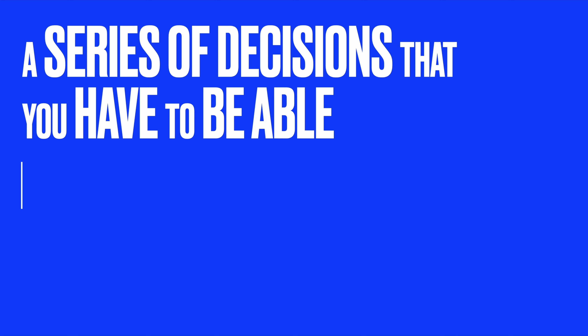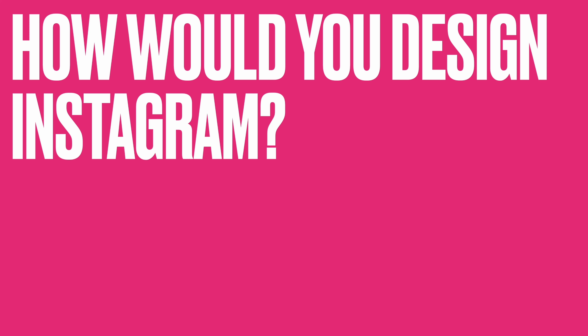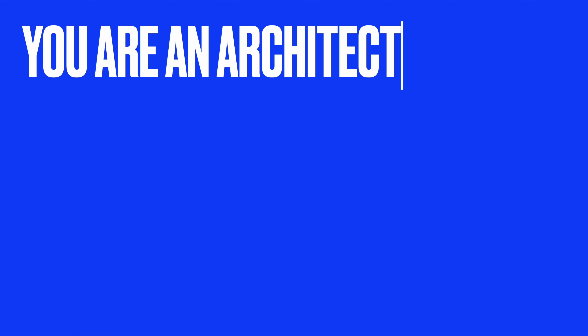Just like with real software systems, the system design interview question will not have a single correct answer. That makes it extremely different from the coding interview. There is no one optimal solution that you need to come up with, but rather a series of decisions that you have to be able to rationalize. These interviews are designed to assess your ability to gather requirements and make decisions under conditions of uncertainty. You will not be given all the information up front. Your interviewer will ask a deliberately vague question like, how would you design Instagram? And after you have a tiny heart attack, it is your job to collect the information you need by asking clarifying questions like, which features do we want to focus on, how many users do we want to support, and so on. After you're done with your questions and you feel that you understand the requirements well enough, you need to design the architecture — what are the different components of your system and how do they interact with each other? Your ability to communicate your decision-making process and explain complex technical information will also be judged here. You need to treat this thing as if you are an architect explaining your design to your team.